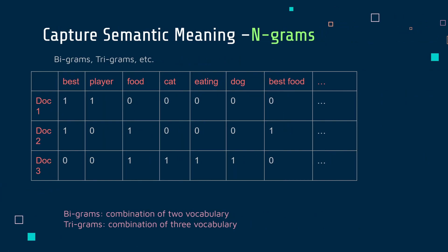So how do we actually capture semantic meaning? We have something called n-grams, where n can be any number. If n is 2, it's called bigrams; if it's 3, it's called trigrams — these are Greek roots. For bigrams, you combine two terms, for example 'best player', 'best food', and count how many times each pair occurs in each document. In document two, 'best food' occurred once. For trigrams, I'd combine 'best player food' and count that. This is how we can capture semantic meaning using n-grams.